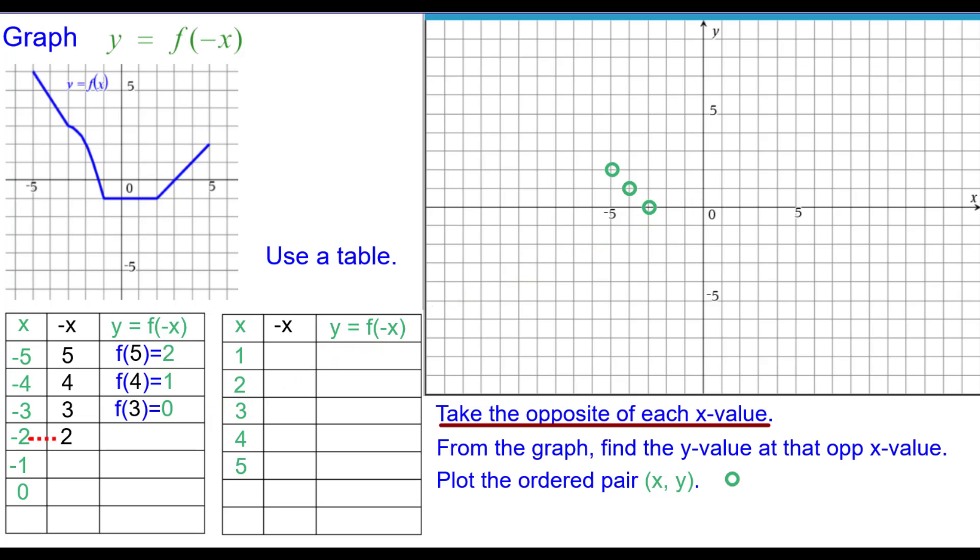The opposite of negative 2 is positive 2. f at 2 on this function is negative 1, so the ordered pair is negative 2 comma negative 1. At 1 also it's negative 1, so negative 1 comma negative 1. At 0 it's negative 1, so 0 comma negative 1.